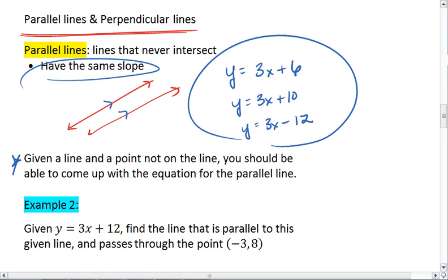If you are given a line and a point not on the line, you should be able to come up with the equation for a parallel line. This is the same as being given the slope and a point that the line passes through. Let's look at an example.